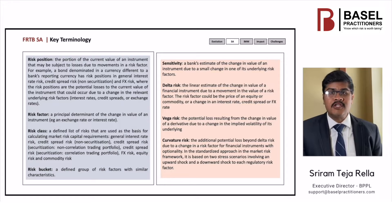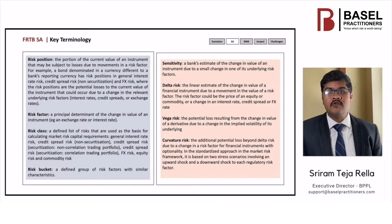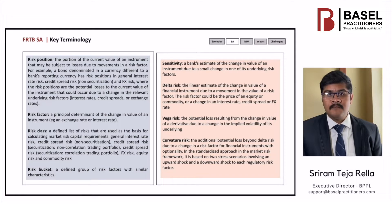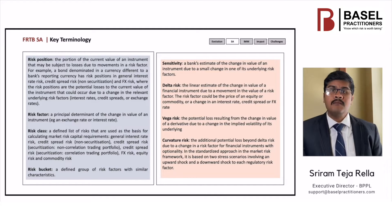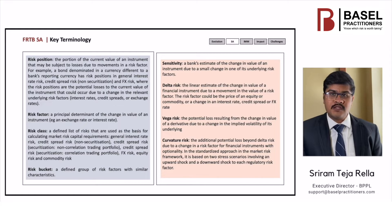Delta risk measures the change in price due to a small price or rate shock to the value of each relevant risk factor. Vega risk is a risk due to variations in the volatility for options, computed as the product of the vega of a given option and its implied volatility. Curvature risk captures the additional risk due to movement in the delta when the price changes. Both vega and curvature are applicable only for those instruments wherein optionality is embedded.